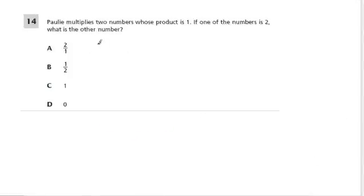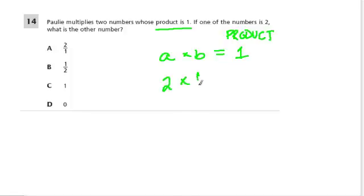And they might ask this in other ways. Paoli multiplies two numbers whose product is 1. That means we take a number A times B, and that result is called the product. In this case, the product is 1. So if one of the numbers is 2, then 2 times something, say B, equals 1. What is the other number? Well, one way to think about this is to find the reciprocal. So 2 times 1 half gives us 1. That's saying two groups of a half, which is 1. So here, the other number is 1 half.